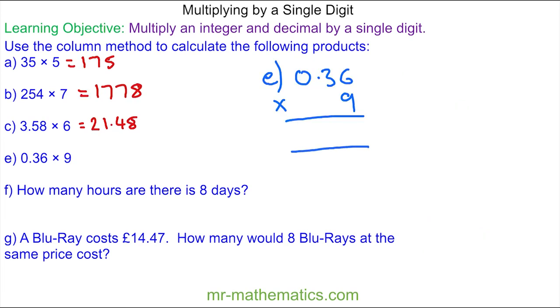So for question E, we have 0.36 times 9. We'll begin by lining up the decimal point. 6 times 9 is 54 which is 5 tenths and 4 hundredths. 3 times 9 is 27. Add the 5 which is 32. So 3 units and 2 tenths.